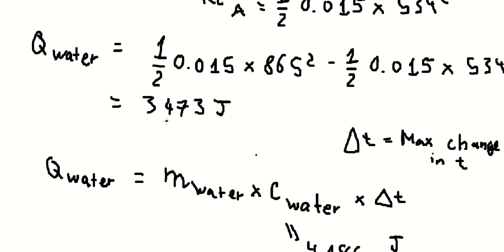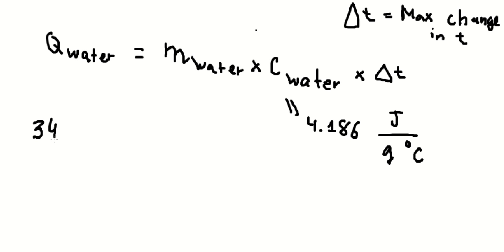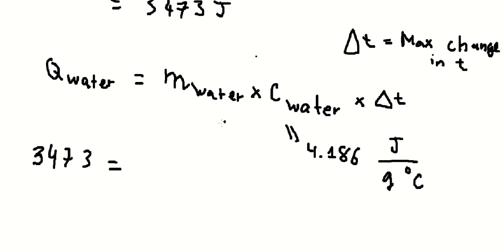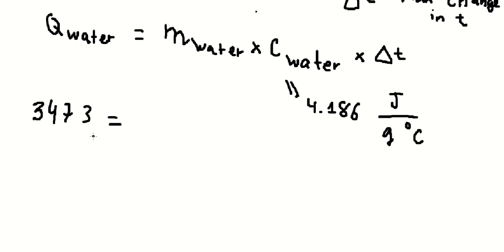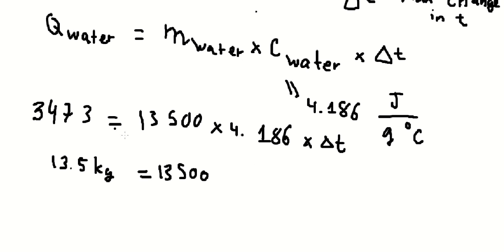The number we just calculated, we put here. We need to convert 13.5 kilograms into grams because the units here use grams. Now we divide both sides and we have the final answer.